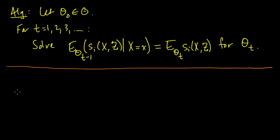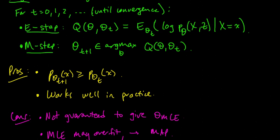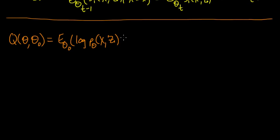In the general EM setup, we had this function Q(theta, theta_0), which was the conditional expectation using theta_0 of the log of the joint probability p_theta of x and z, given x equals little x. We wanted to maximize this with respect to theta — that was the general step in the iteration. Now let's suppose we have an exponential family of the same form.